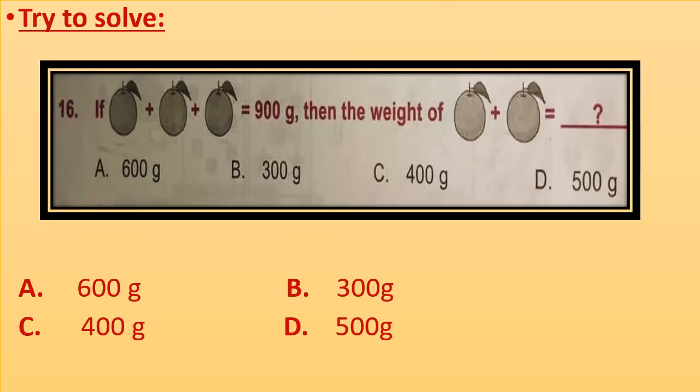The question is given in the picture. If orange plus orange plus orange equals to 900 grams, then the weight of orange plus orange equals to 600 grams, 300 grams, 400 grams or 500 grams. Now try to solve the question.